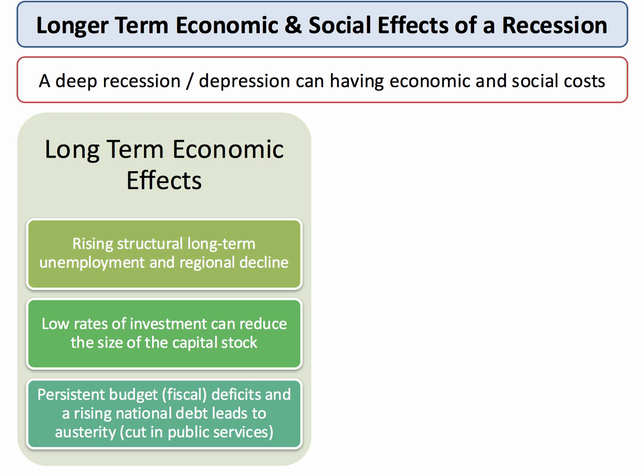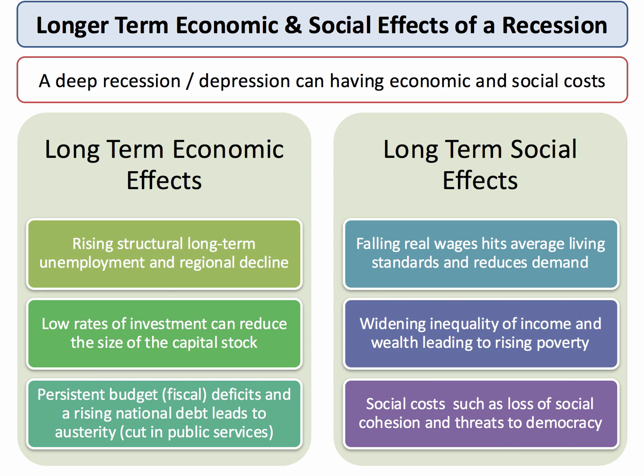Recessions can have long-term social effects too — really quite important. If wages go down in real terms, it hits living standards and affects demand. Recessions may lead to a widening gap between rich and poor — a rise in relative poverty and increased poverty among low-income groups. We can't ignore the fact that recession can cause social costs: loss of social cohesion, maybe increased juvenile delinquency, and can even be a threat to democracy. In plenty of countries, recession is undermining people's trust in elected politicians, organisations, corporations, and banks. We should never take democracy for granted.